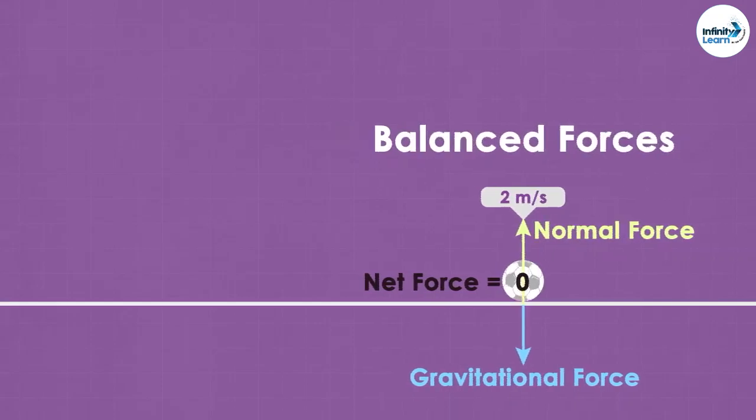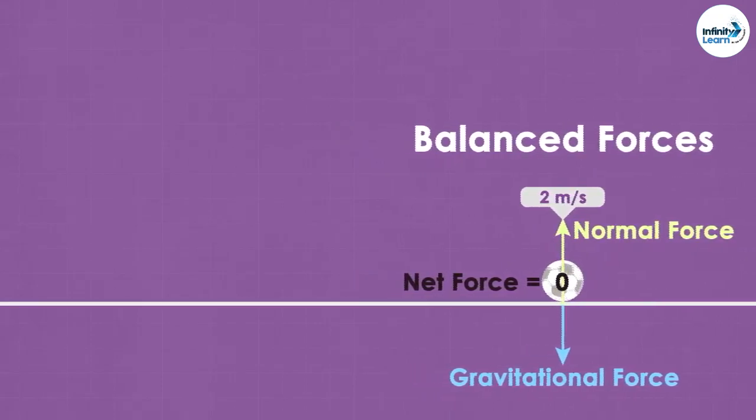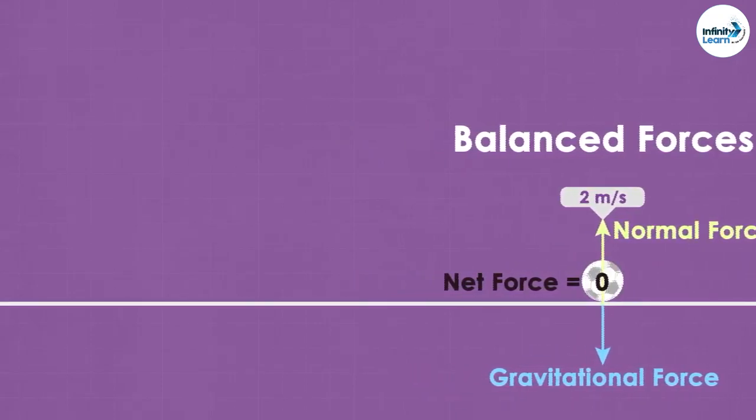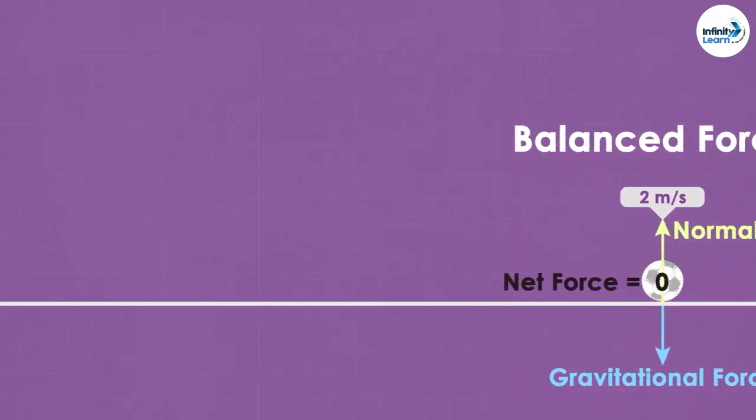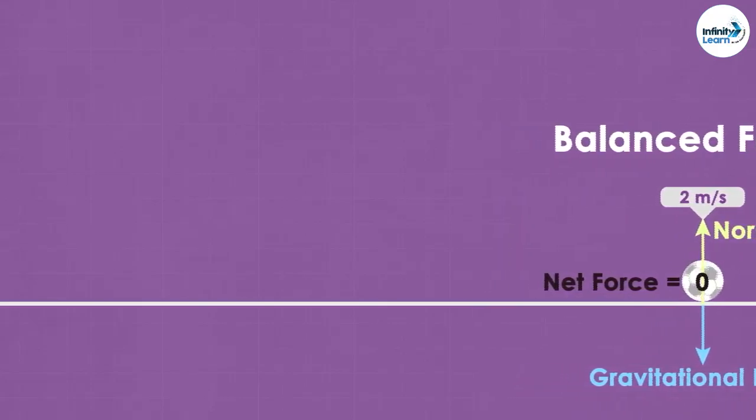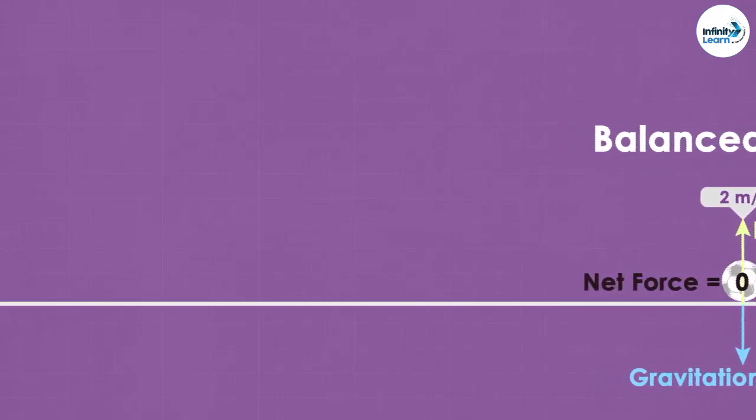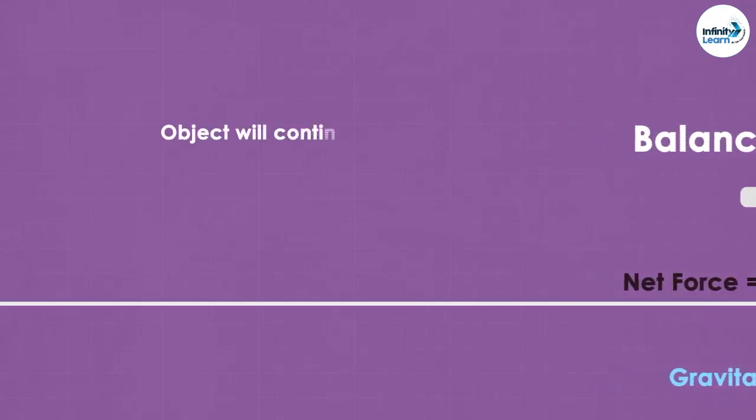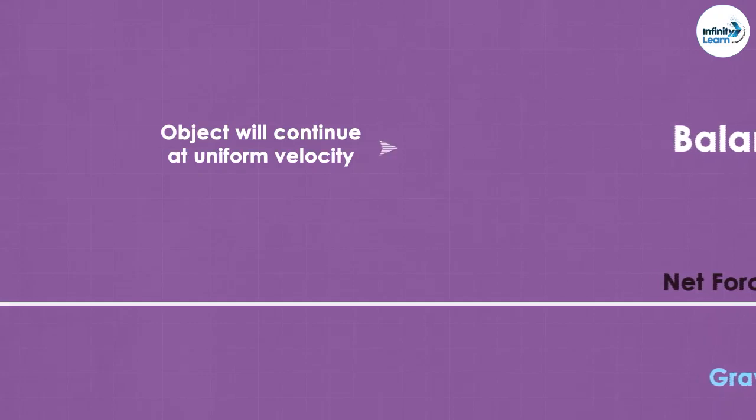Here, as the forces are balanced, the ball will continue to move at 2 meters per second. Most people assume that if the object is moving, then there is some net force acting on it, but that's not true. An object will continue to move at uniform velocity even if the net force on it is zero.